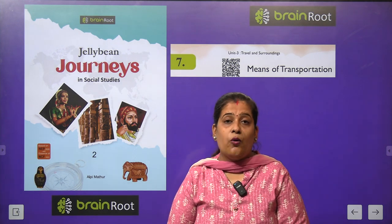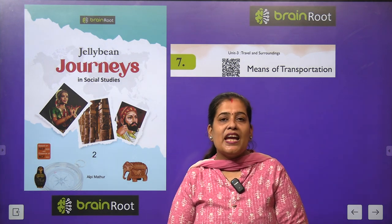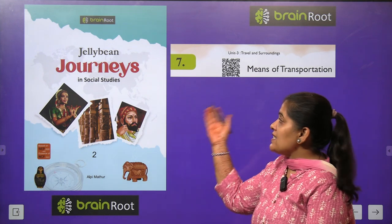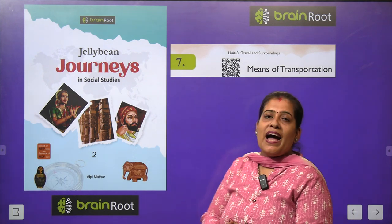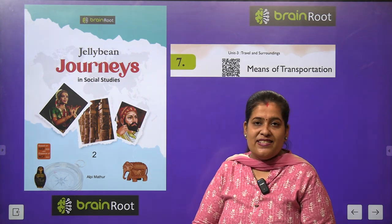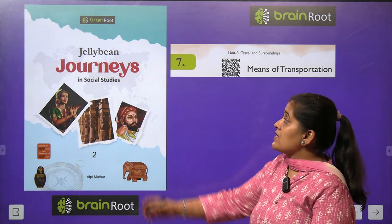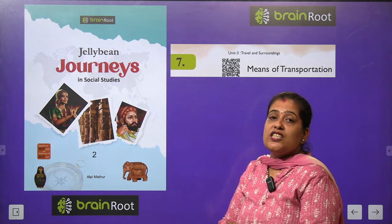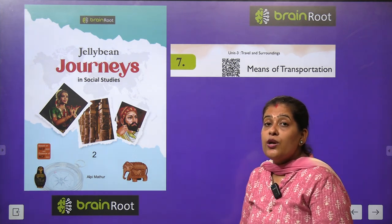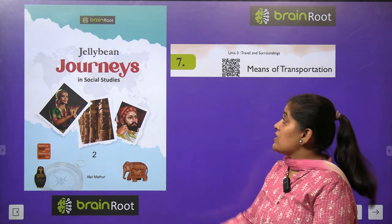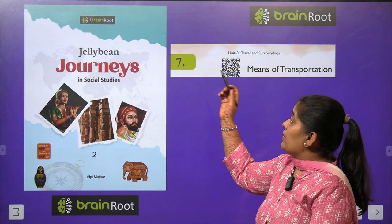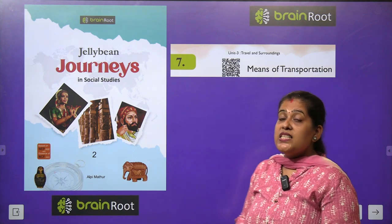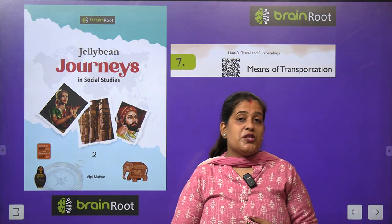Hello my dear kids, welcome back again with another chapter of our SST book by Brain Road series. The name of our book is Jelly Bean Journeys in Social Studies. Today we are going to start chapter number 7 and the name of our chapter is Means of Transportation.